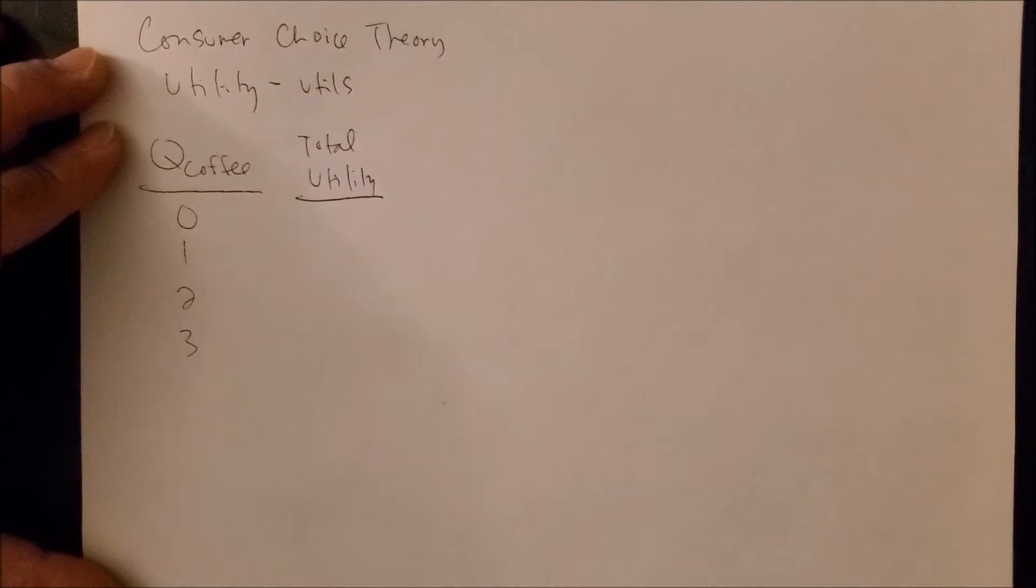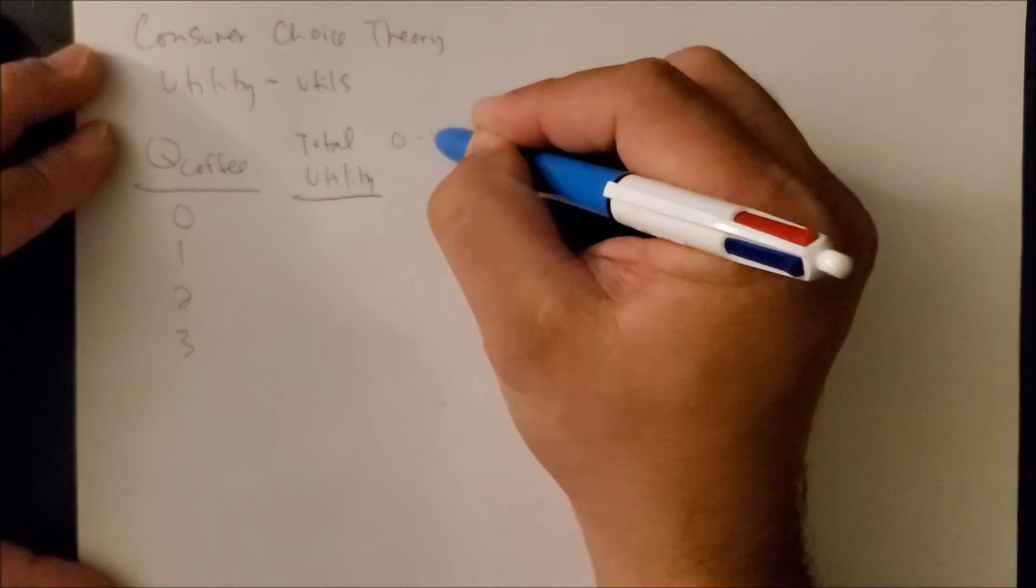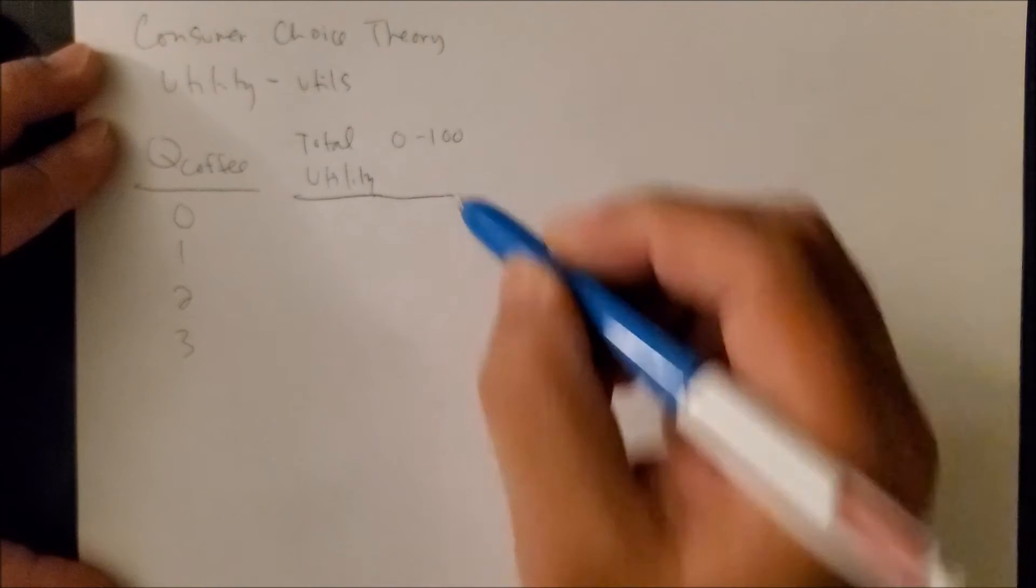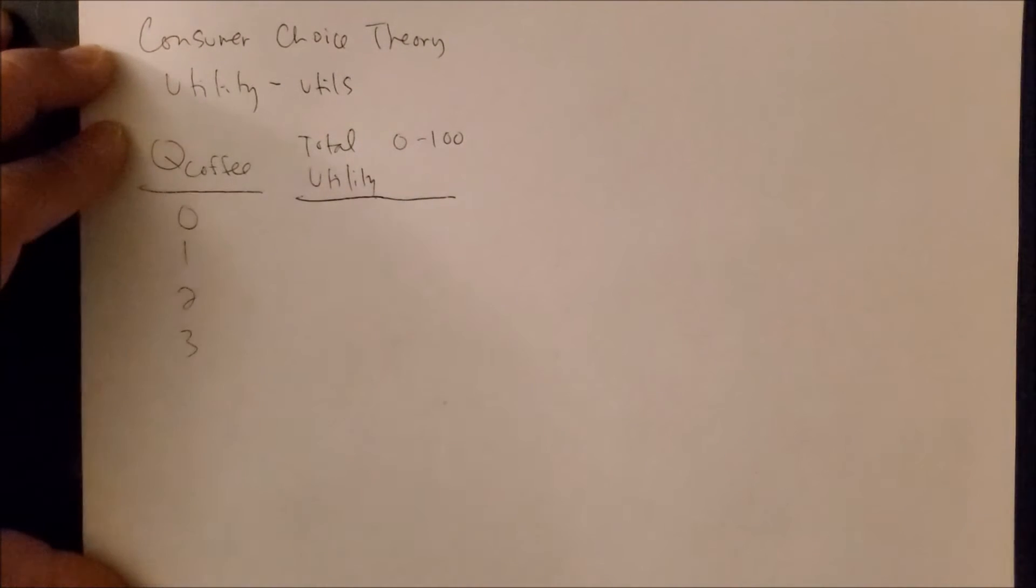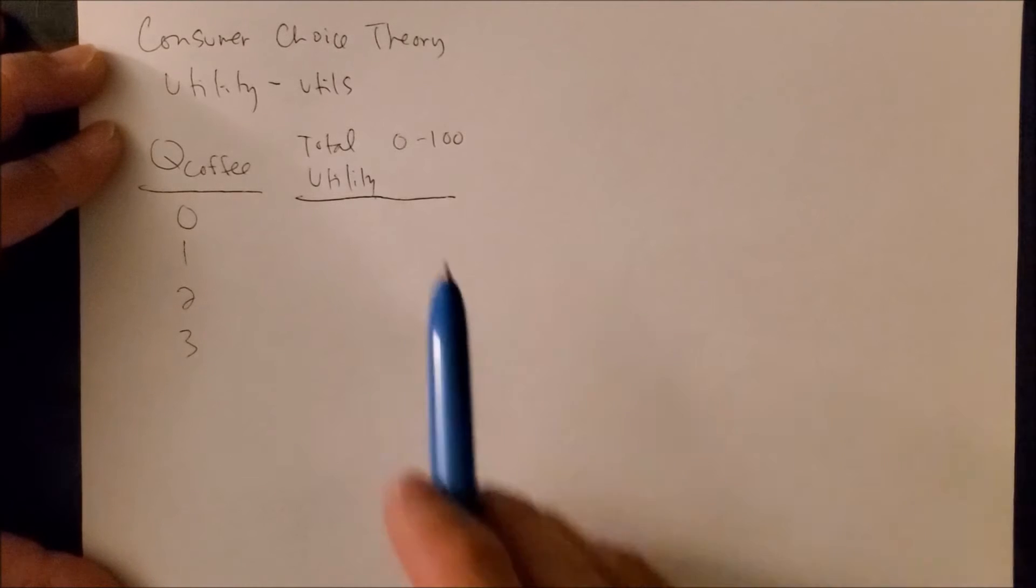This is kind of where you as the researcher can really provide your own input into the parameter you want to use in measuring total utility. I'm going to make mine simple and I'm going to use the parameter from zero to 100. The reason why is because if you think about this, our entire life in school has been based upon this scale, this grade scale from zero to 100.